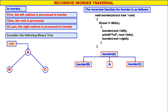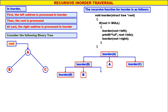We come to inorder of B. B is not equal to null. Left child of B is null, therefore inorder of null — when root is null, nothing happens. Display B. Right child of B is also null, therefore inorder of null — nothing happens. B will be the first one to be displayed. Inorder of B is over. Next, A will be the second one to be displayed.